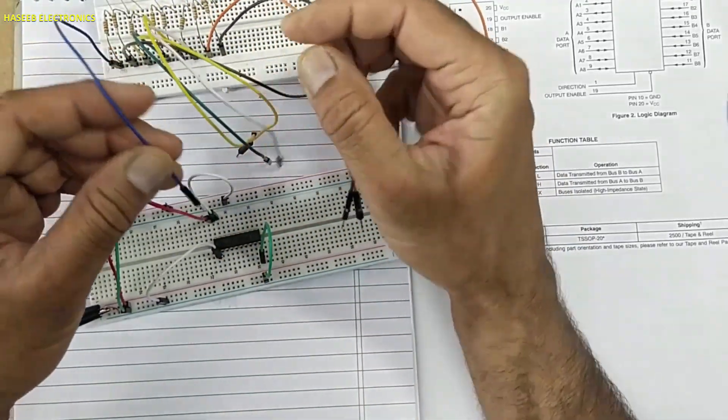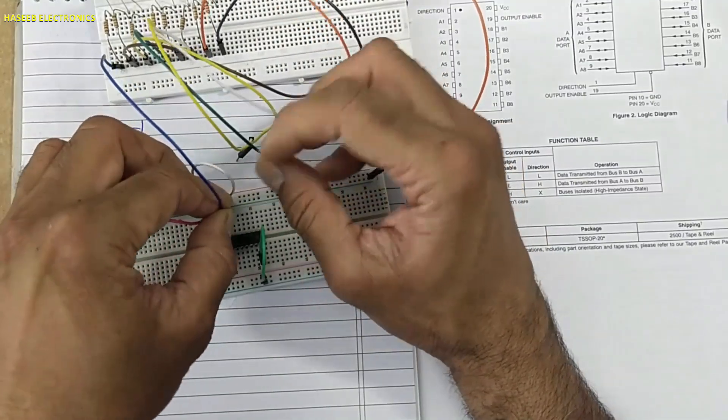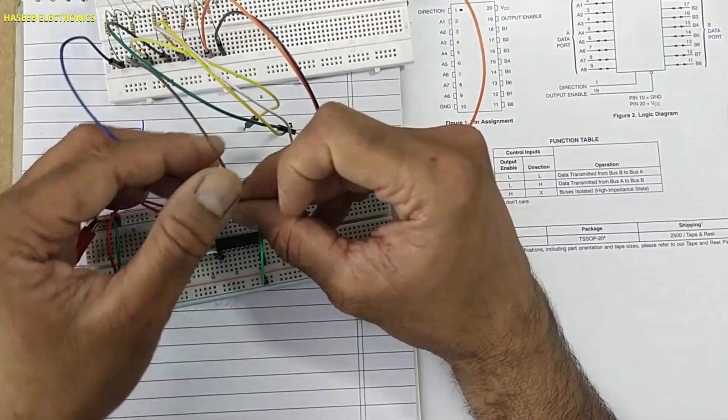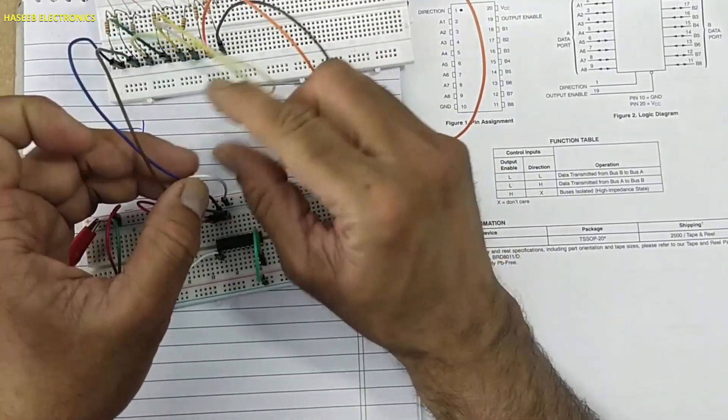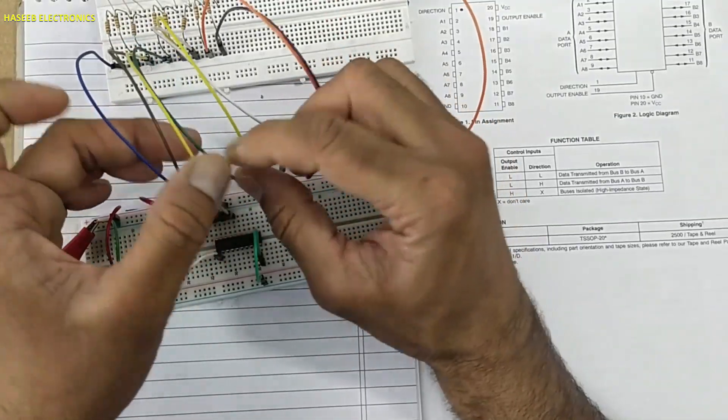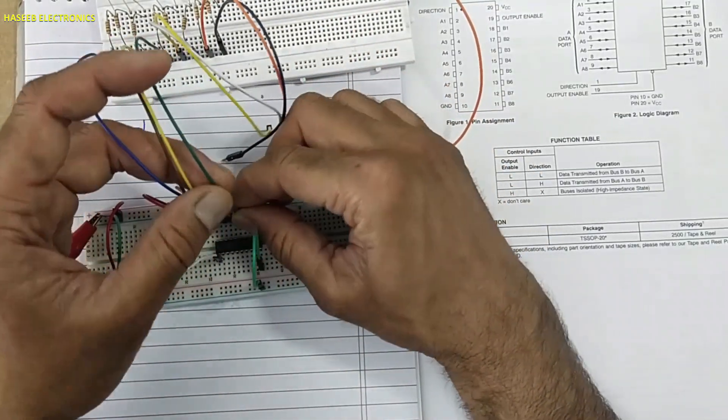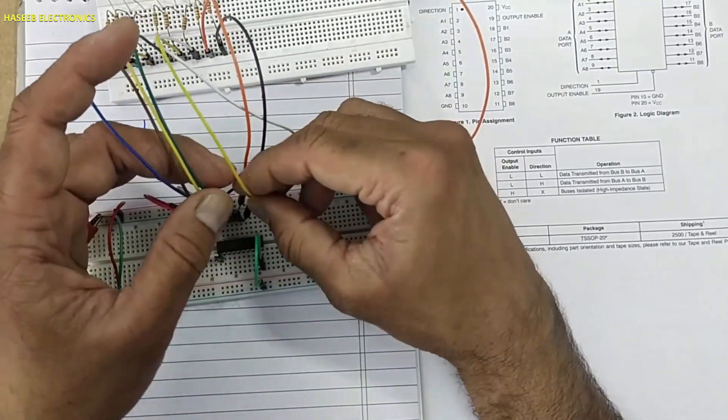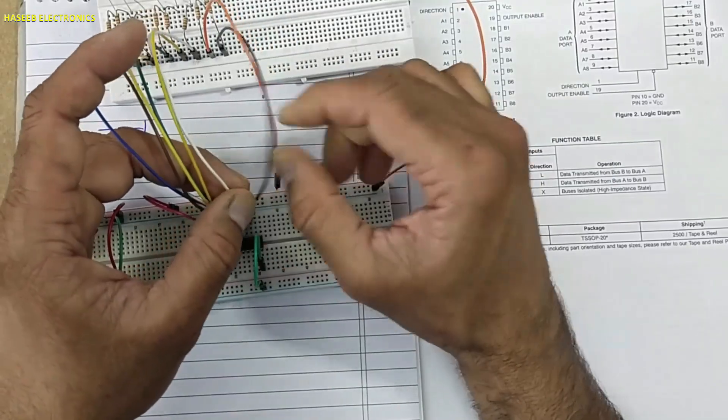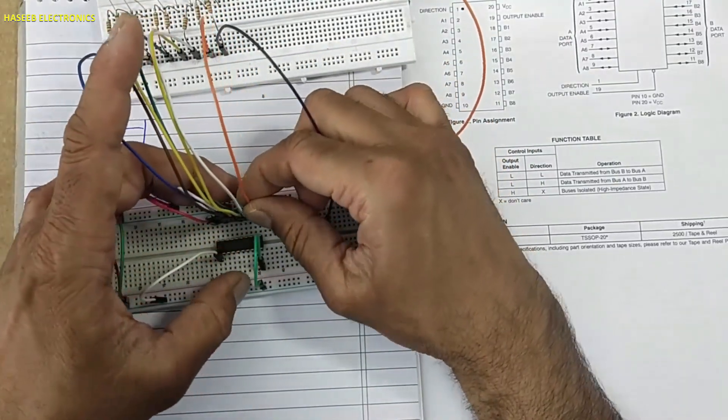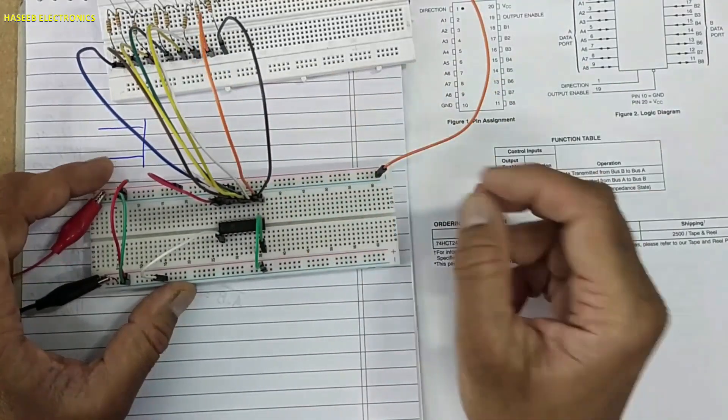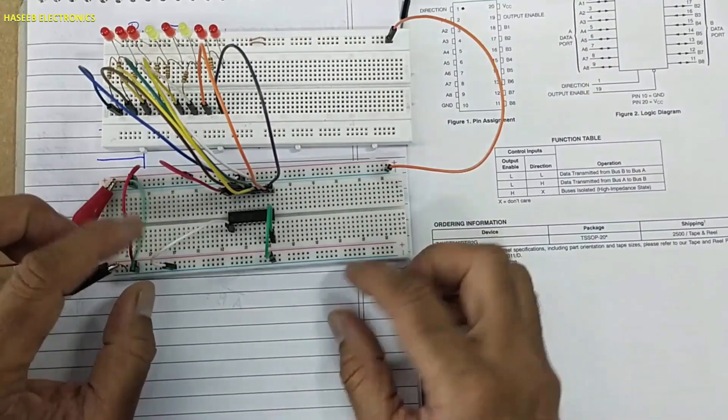So it is called transceiver. At the same pins it is sending data and it is receiving data, just by changing the enable and direction pins. It is also called read-write function. Most of the time this IC is used to access data from the memories, and also it is used to read or write data from different digital items, digital components.